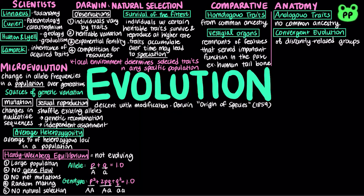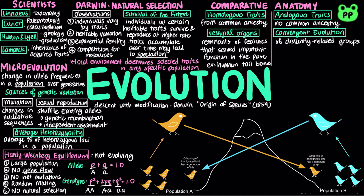Natural selection, or the differential success in reproduction, is only one of the three major factors that alter allele frequencies and bring about most evolutionary changes. Natural selection is a non-random process. As mentioned earlier, gene flow, which is the immigration and emigration of individuals into and out of the population, can also change allele frequencies. It is a random process.